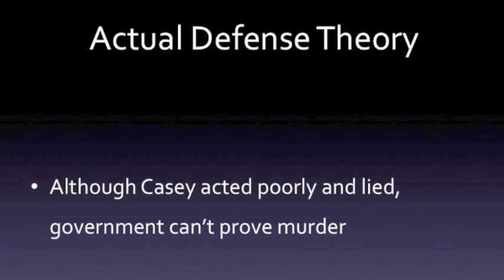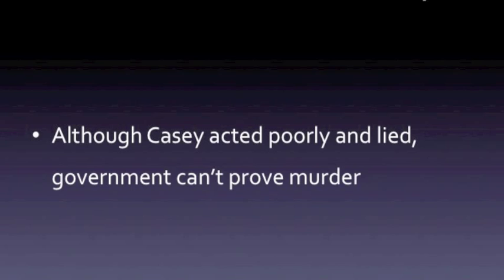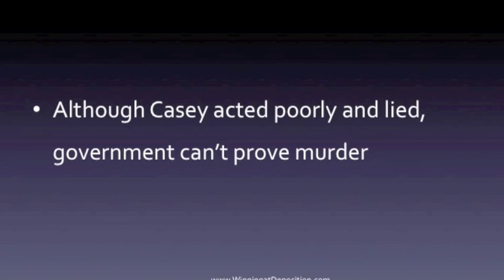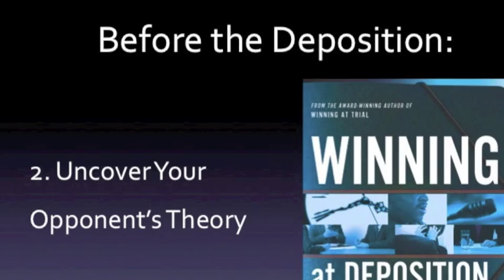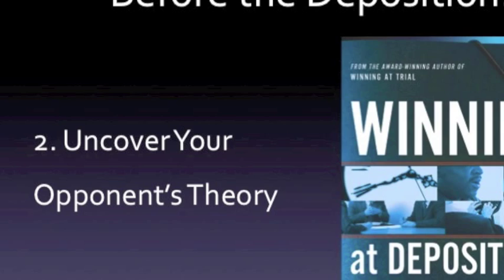If the defense had not admitted that Casey acted very poorly and lied to everyone, they would have lost their credibility with the jury. And by admitting these things, the defense was then able to show that the government had a very circumstantial case and couldn't prove the murder. Not only must you determine your theory, but you need to uncover your opponent's theory. You don't want to be sitting in a deposition and hear for the first time from the opposing lawyer what his case is all about.